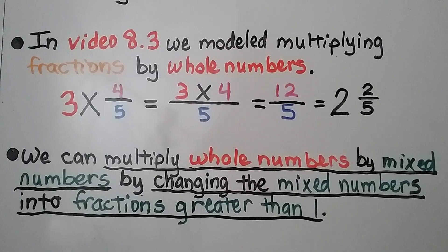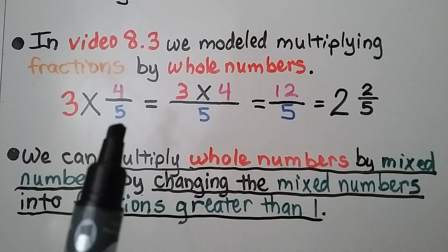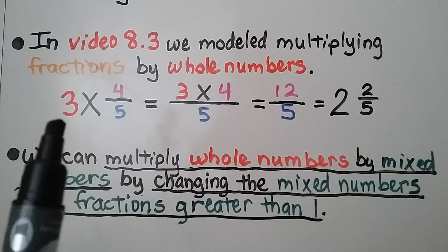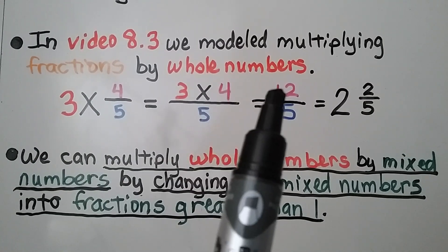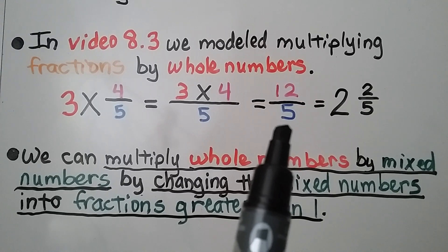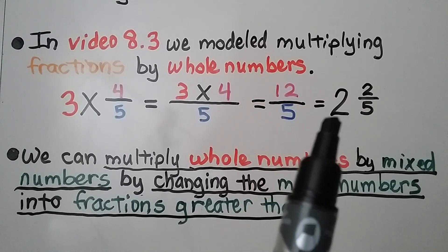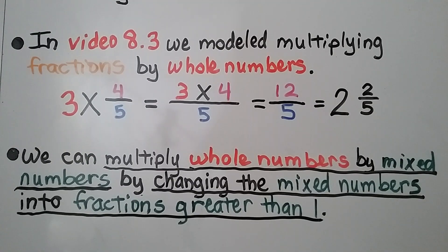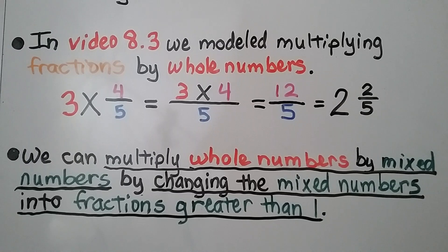In video 8.3, we modeled multiplying fractions by whole numbers. We have a whole number 3 that we're multiplying to the fraction 4 fifths. We learned that we multiply the whole number to the numerator. We have 3 times 4, which is equal to 12. We write it over that same denominator — we have 12 fifths. And we put it into simplest form as a mixed number, 2 and 2 fifths.